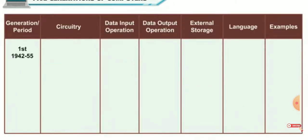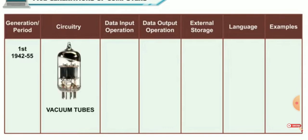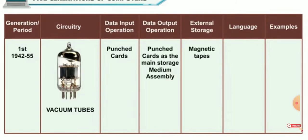The first generation computers, developed between 1942 and 1955, used vacuum tubes. Data input and output was on punched cards, while magnetic tape was used for external storage. These computers used machine assembly language. Examples of first generation computers are ENIAC, UNIVAC, and EDVAC.